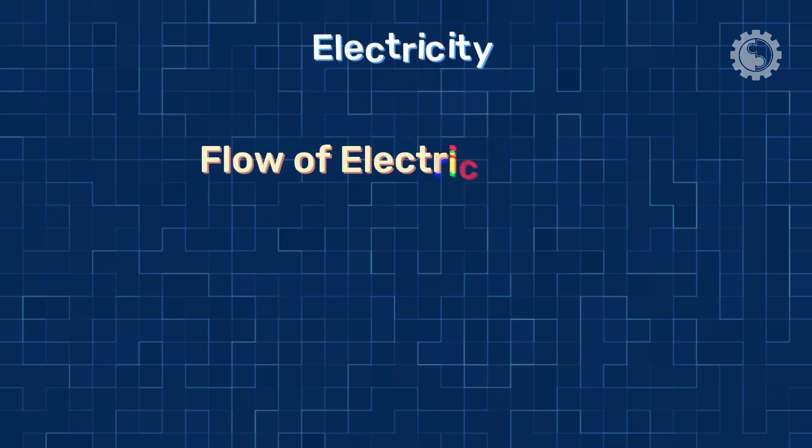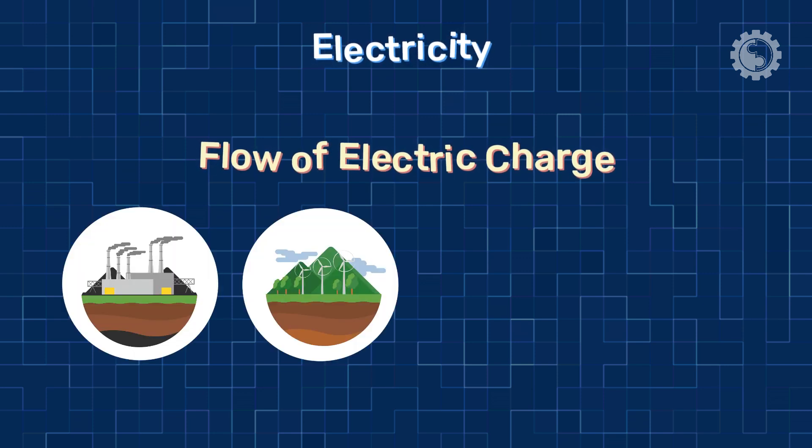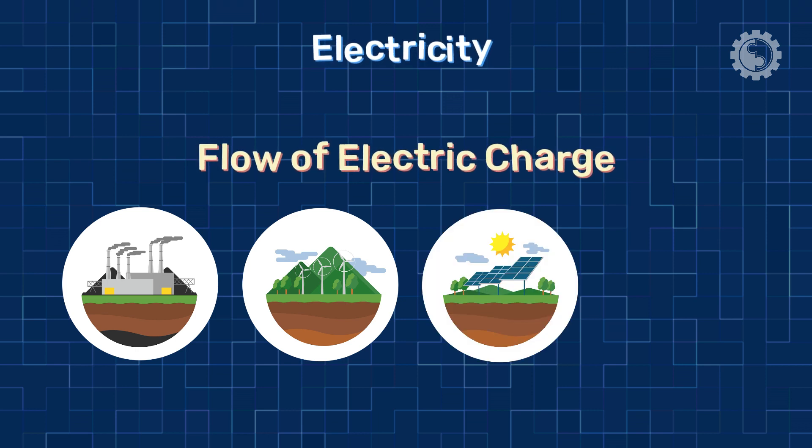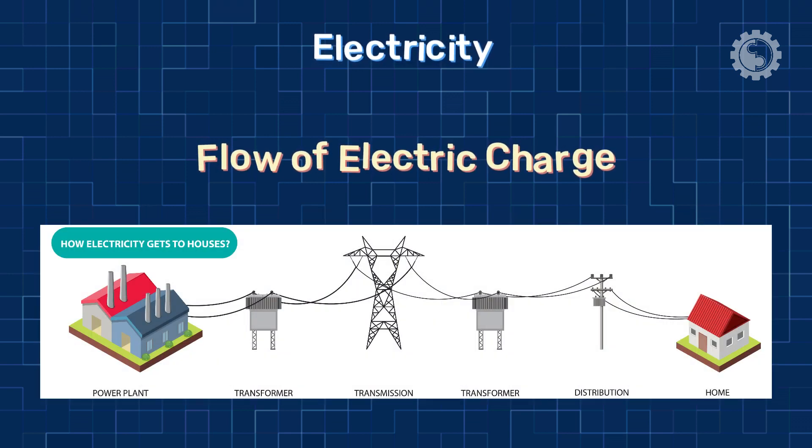So what exactly is electricity? Simply put, it's the flow of electric charge. It's generated in power plants through various methods like burning fossil fuels, harnessing wind or solar energy, or using nuclear reactions. Once generated, it's transmitted over long distances to our homes and businesses via a complex network of power lines.